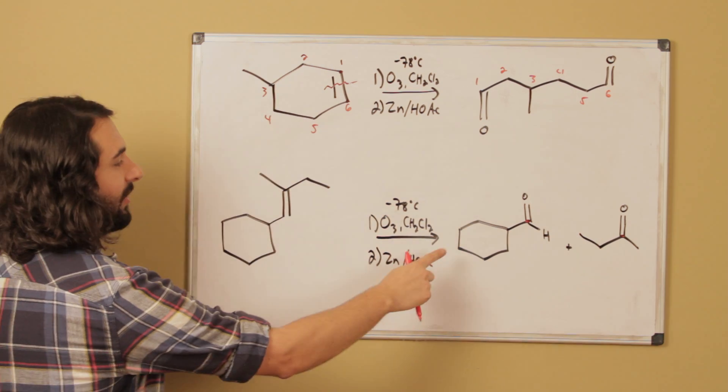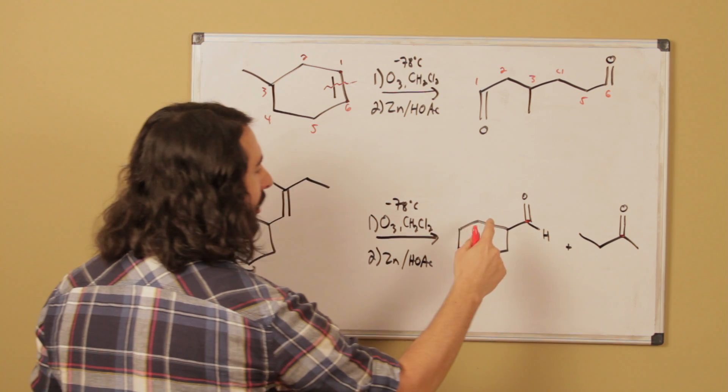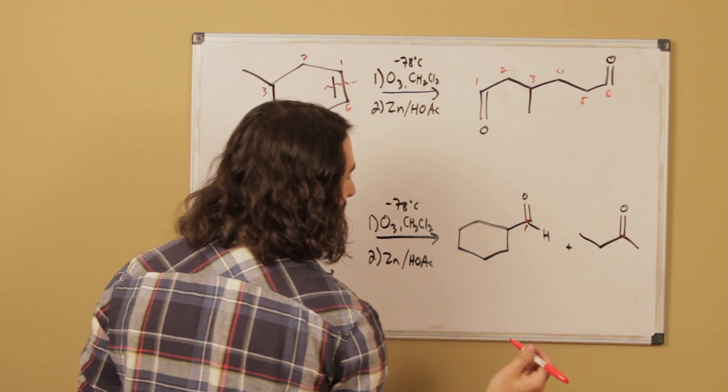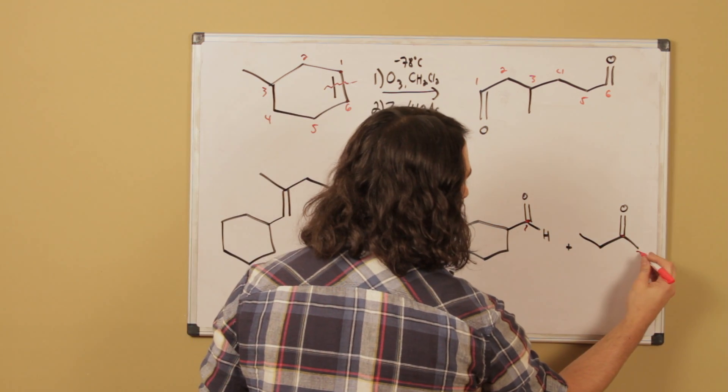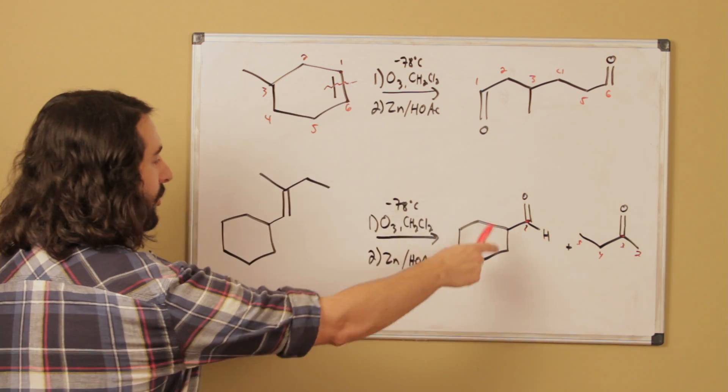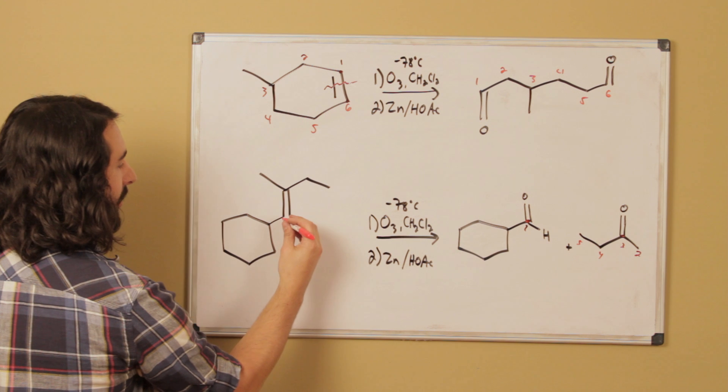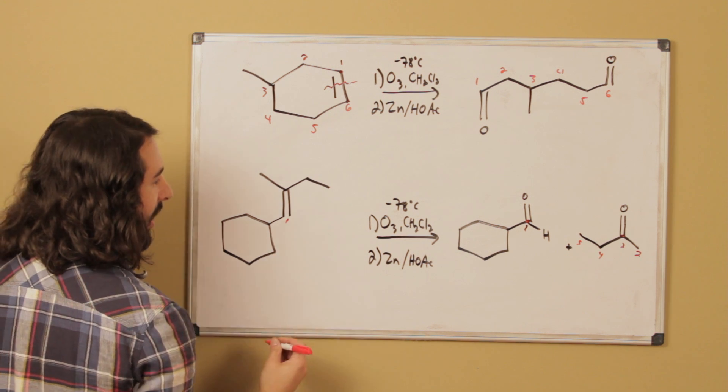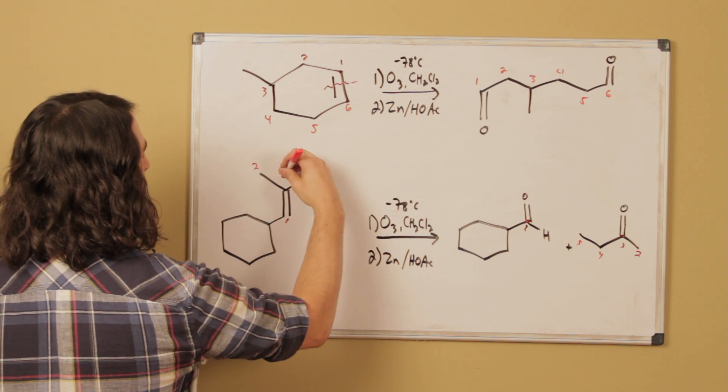So let's draw, we can basically draw this fragment. Here's the cyclohexane and then we'll call that carbon 1 and then we'll call this 2, 3, 4, 5. We'll just take the cyclohexane as rendered and that's going to be carbon 1, and then over here we can have 2, 3, 4.